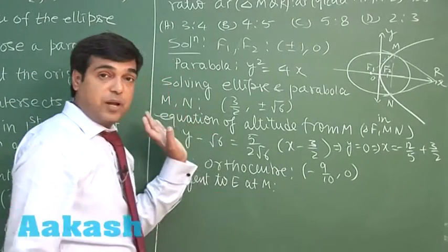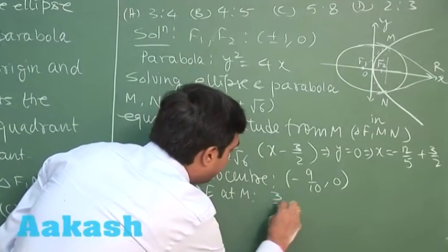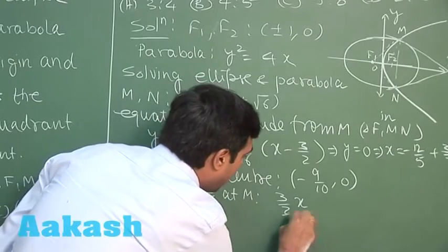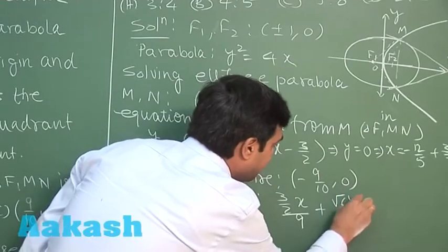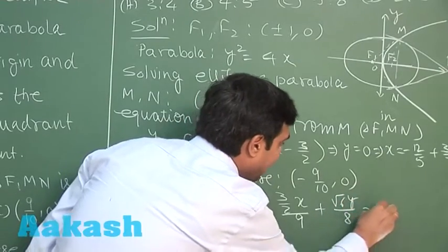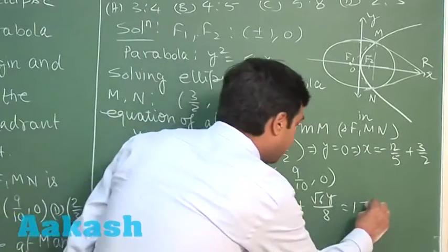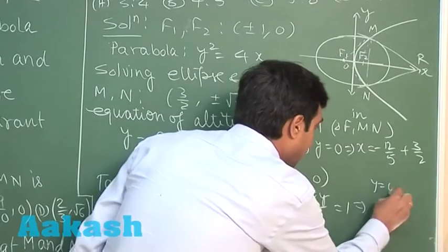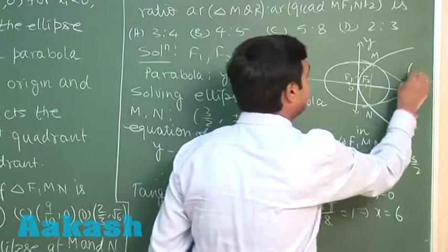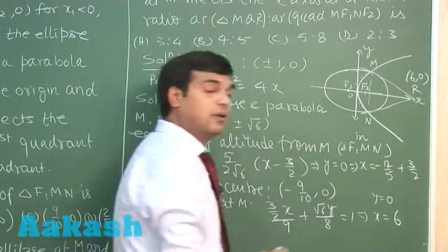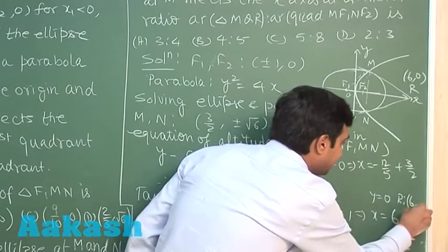Tangent to ellipse at M. Equation of ellipse, that is x square by 9 plus y square by 8 equals 1. From there we have 3 by 2 x upon 9 plus root 6 y upon 8 equals 1. Substituting here y equals 0, we get x equals 6. So the point R is obtained as 6, 0. So from here we have point R as 6, 0.